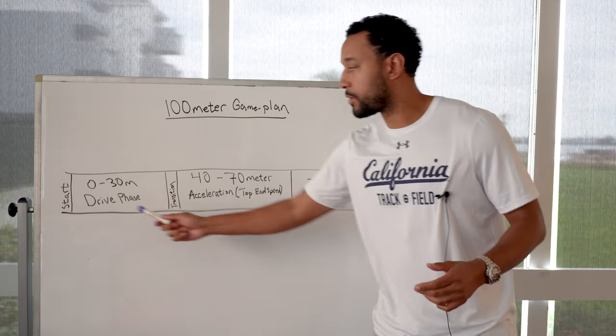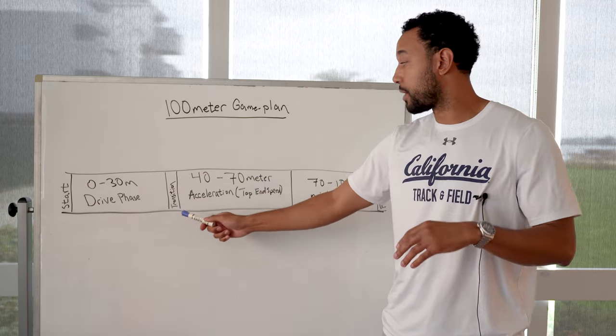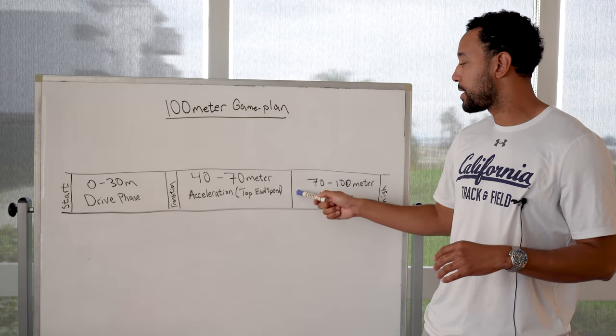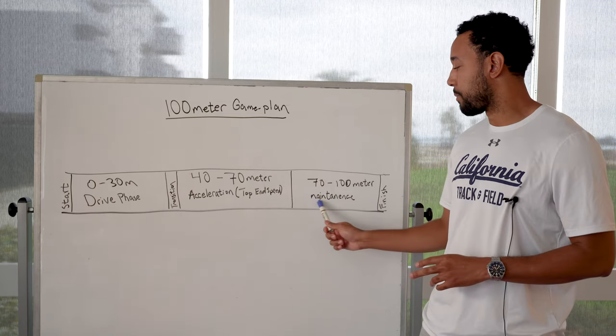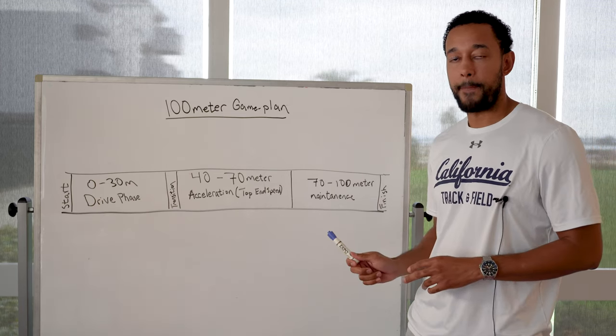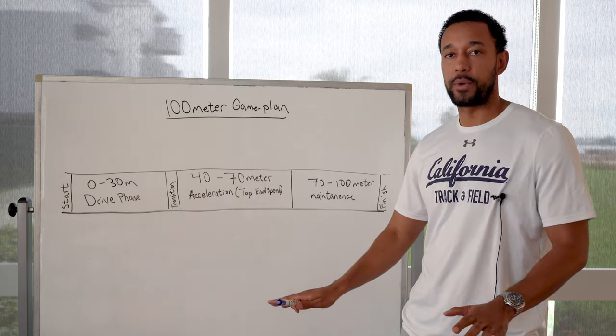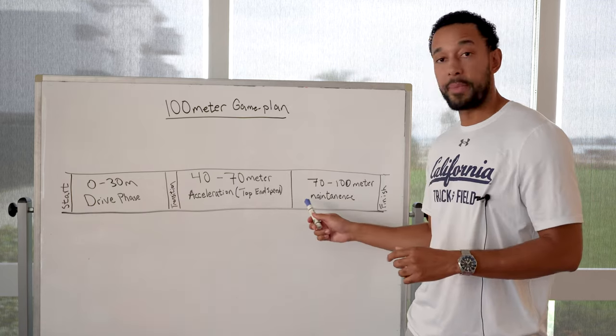So now that you worked your way through your drive phase, you've transitioned smoothly, you don't just pop straight up, you accelerated towards your top end speed. Now you're beginning to get into this maintenance phase. Everyone in the world is going to slow down between 70 and 100 meters. Everyone. It's just about who slows down the least.